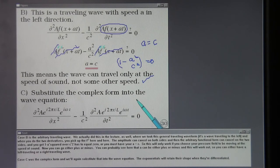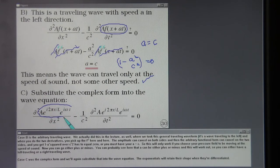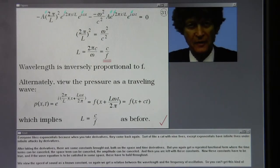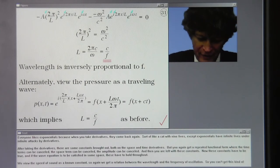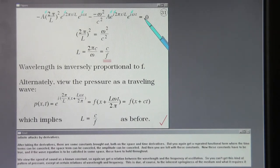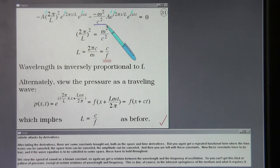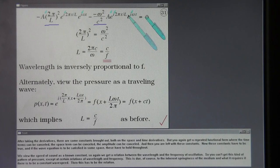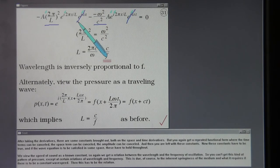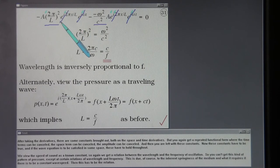Case C was the complex form and we'll again substitute that into the wave equation. The exponentials will retain their shape when they're differentiated. Everybody likes exponentials because when you take derivatives they come back again. Sort of like a cat with nine lives. Except exponentials have infinite lives under infinite attacks by derivatives. After taking the derivatives there are some constants brought out both on the space and time derivatives. But you again get a repeated functional form where the time terms can be canceled, the space term can be canceled, the amplitude can be canceled, and then you're left with these constants.